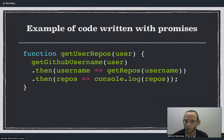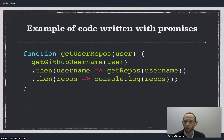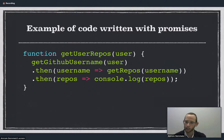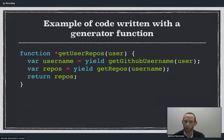I want to show you a function written with promises and then that same function written with a generator, to show you the contrast between the styles. We have a function that gets all repos for a given user on GitHub. The first thing we do is get a GitHub username for this user from the database, then when that returns we call get repos, which calls the GitHub API and gets a list of all that user's repos, and then we log those repos. As you can see, this promise-based function looks very different from regular blocking synchronous code. On the other hand, the generator function does the same exact thing but looks more like blocking code: first we call get GitHub username, and when that returns it's saved to username, then we call get repos with that username and assign it to repos, then return those repos.